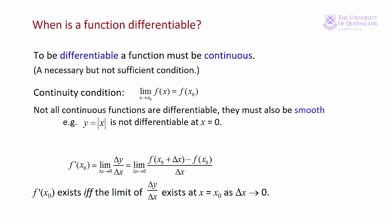Now just to recap when a function is differentiable. A function must be continuous — we have a continuity condition here. If the limit as x approaches x₀ of f(x) is actually f(x₀), then the function is continuous. If we applied that test to our first example we would find that wasn't the case — at x = 0 that earlier function was undefined, so we didn't have continuity there. But not all continuous functions are differentiable; they must also be smooth.